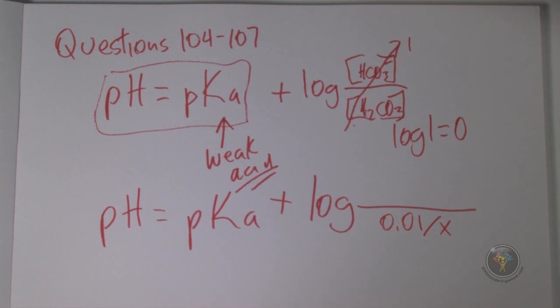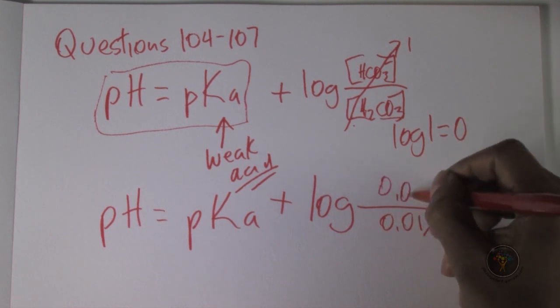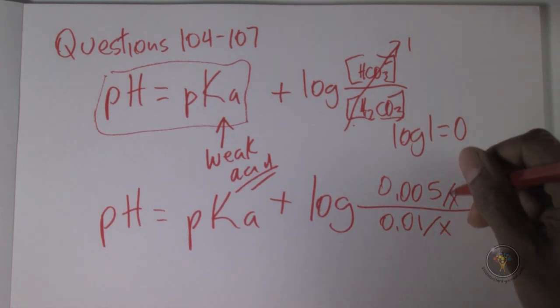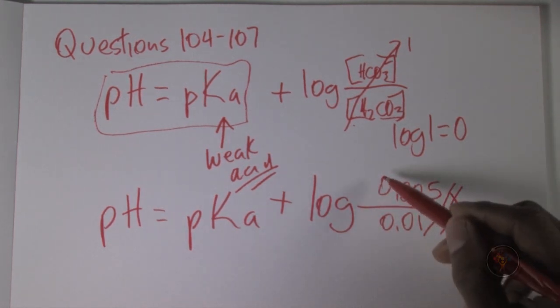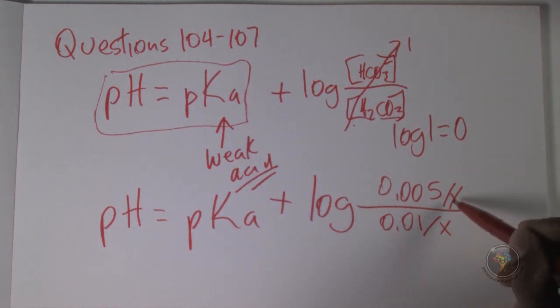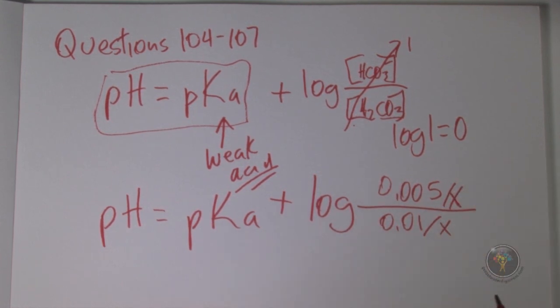So I'm going to put 0.01 over x. I do it in my head, but you can do it any way you would like, but don't use a calculator, and then for the other one, we have 0.025, not 25 mils, but 0.025 times 0.2, so that's going to end up being 0.005. Okay, so you're saying, why did I put x's there? I put x's there because I don't know what the volume is, and we just calculated the number of moles.